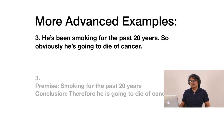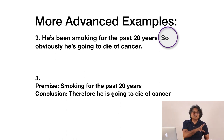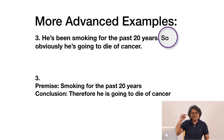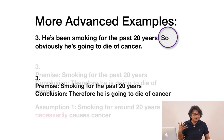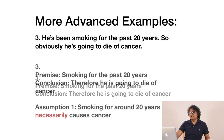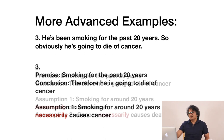The premise is: he's been smoking for the past 20 years. The conclusion — indicated by the word 'so' — is: therefore he's going to die of cancer. Now ask yourself: is this a valid argument? Are the premises sufficient to reach this conclusion? The answer is obviously no. This premise alone does not lead to this conclusion. The first assumption is that smoking for around 20 years necessarily causes cancer.